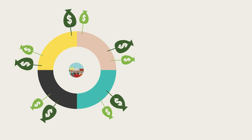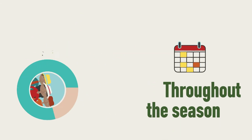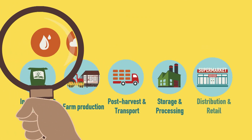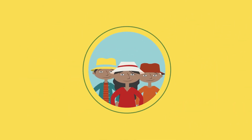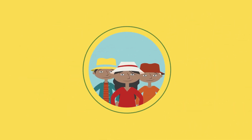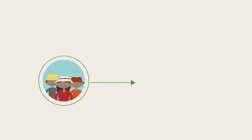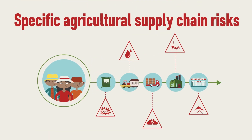As with all agro enterprises, producer associations require financing throughout the season and long-term investment for critical parts of their operations and infrastructure. As is the case for agribusiness credit risk assessment, a producer association needs to be assessed against both the traditional business credit assessment criteria — the 5 C's — and against their ability to manage specific agricultural supply chain risks.